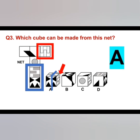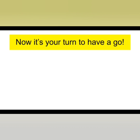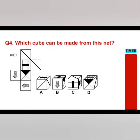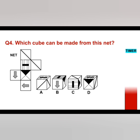If I was working through these and found that A wasn't the correct answer, I would eliminate it until I reached the correct answer. So the correct answer for question three is A. Now it's your turn — please put your answer to question four in the comments section below the video for marking. Which cube can be made from that net? Here's the timer. Put your answer in the comments section below.